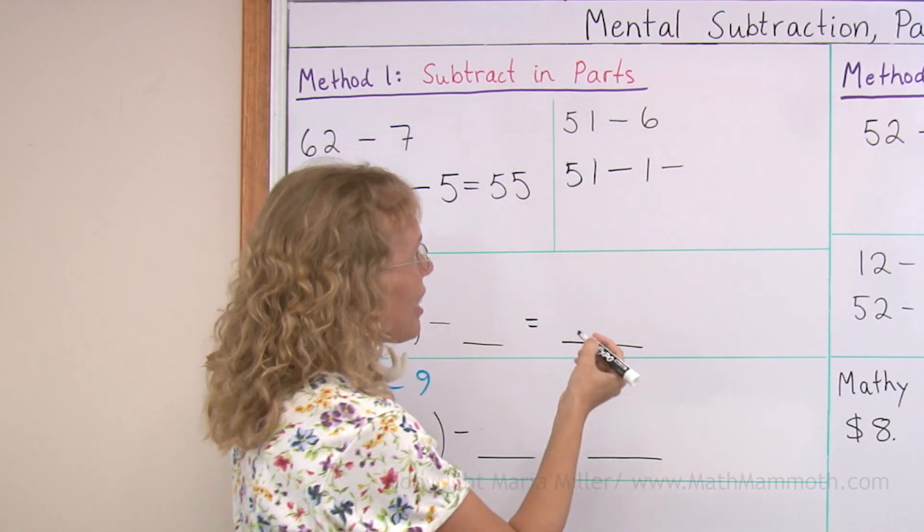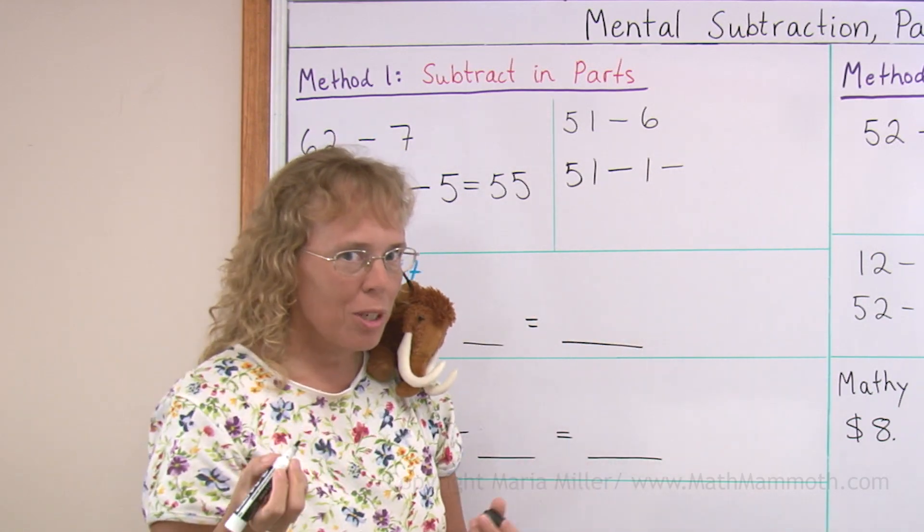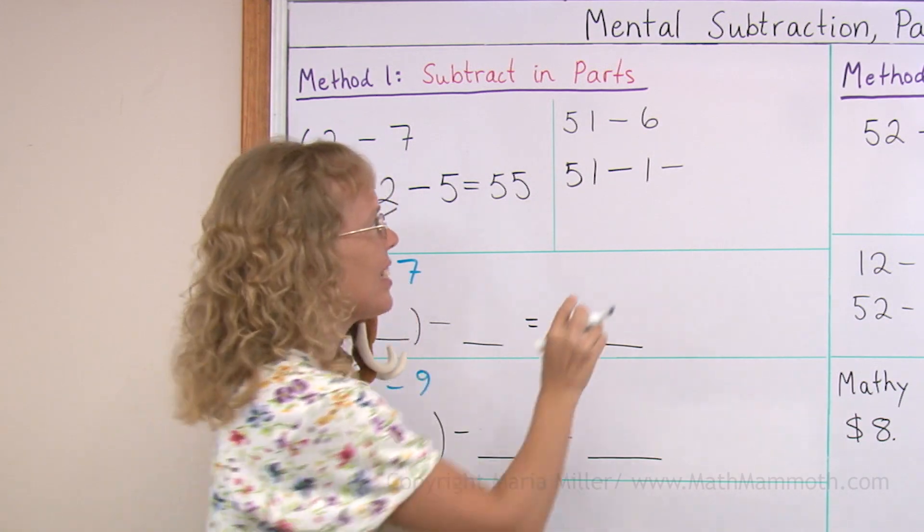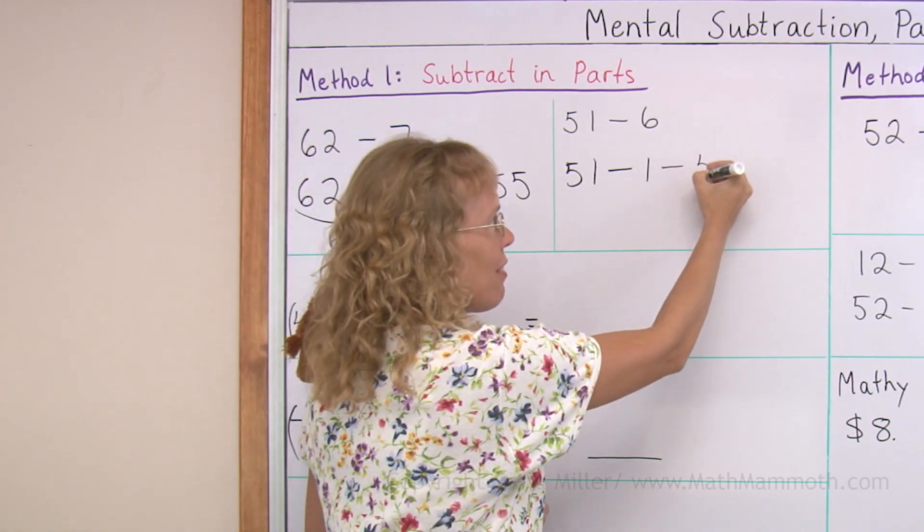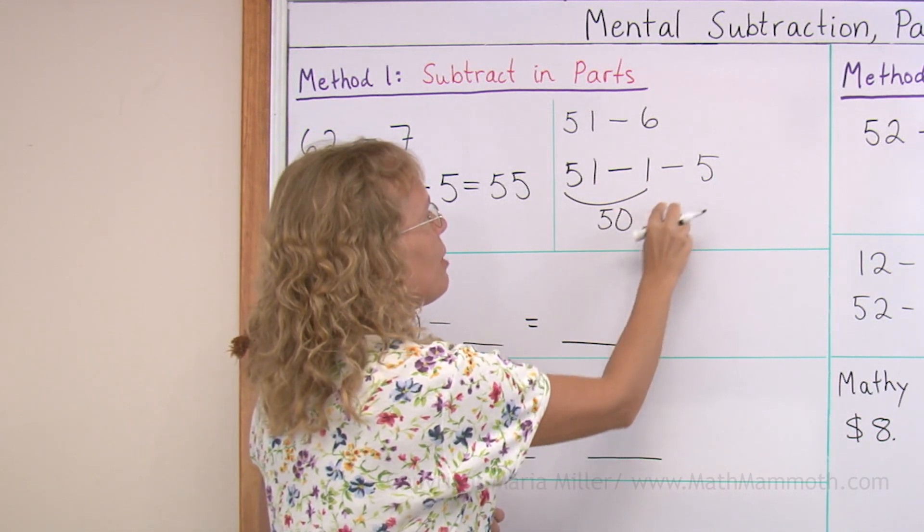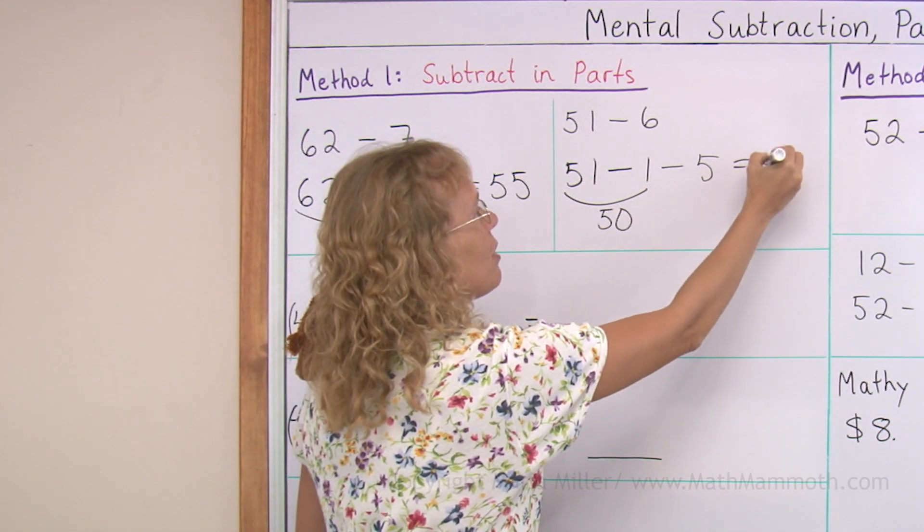And then we need to subtract some more. How much more? We need to subtract a total of 6. Take away 1 and take away 5, right? And so this is 50 and we get 50 minus 5 equals 45.